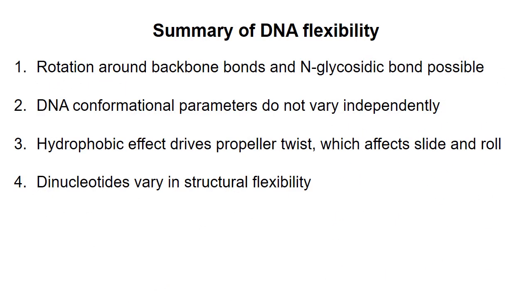To summarize, flexibility in the double helix is allowed by rotation around six backbone bonds as well as the N-glycosidic bond between the sugar and the base. Hoogsteen base pairing does occur to a small extent in B-DNA. The different rotational and translational parameters such as twist, slide, and roll affect each other and do not vary independently. I illustrated this by explaining how the hydrophobic effect drives formation of propeller twist, which influences slide and roll. Lastly, different dinucleotides appear to vary in their flexibility, which will influence protein binding to DNA. In the next video, I'll move on to consider structures formed by RNA.